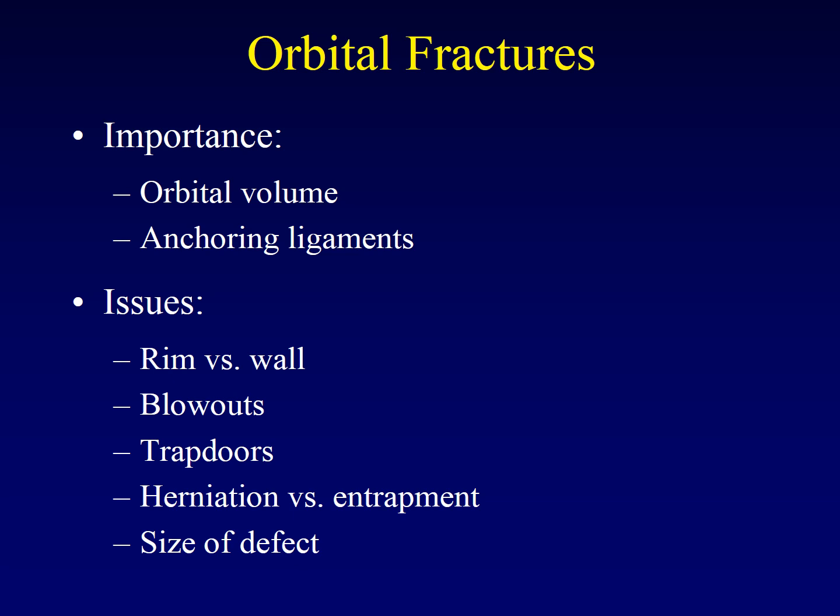Let's talk about orbital fractures. Orbital fractures are critically important because when you have a blowout fracture of the orbit and a component of one of the orbital walls is displaced outward, you have effectively changed the volume of the orbit. The globe can then fall back into the orbit, and once the fracture heals, you'll end up with enophthalmos. That's usually not obvious at presentation due to swelling and hematoma, and the anchoring ligaments for the globe can also be disrupted, resulting in diplopia.